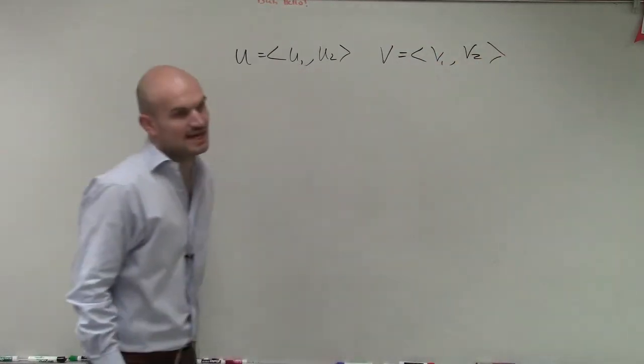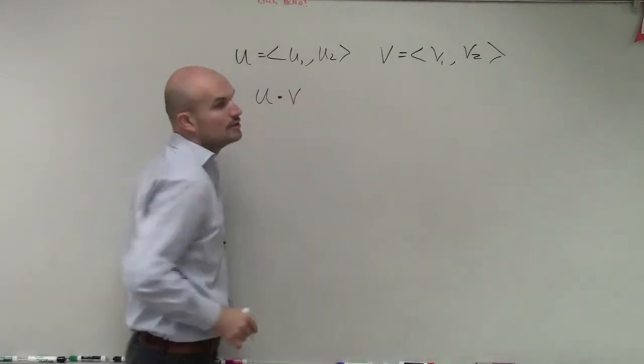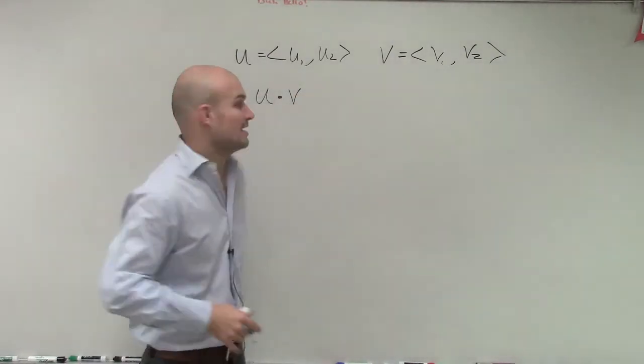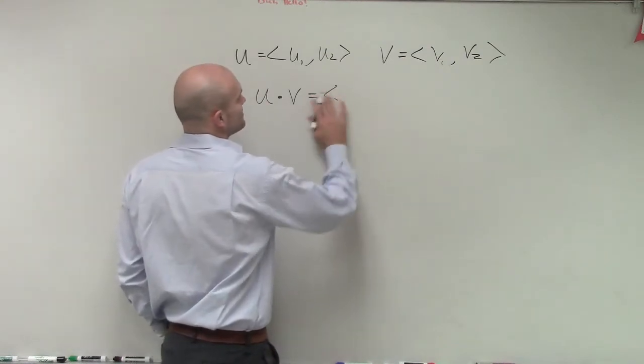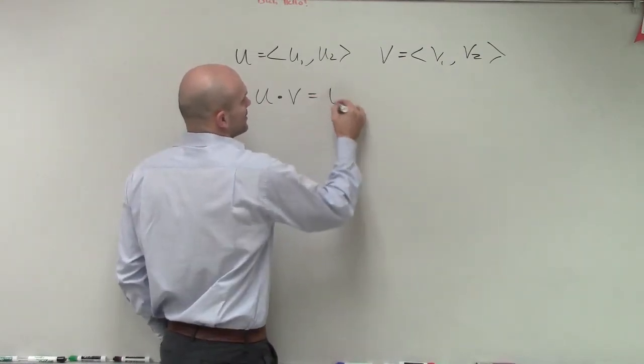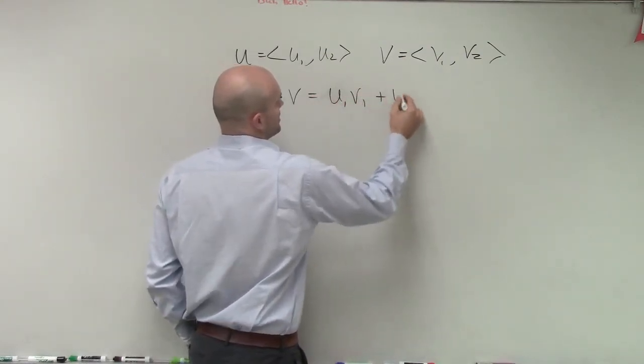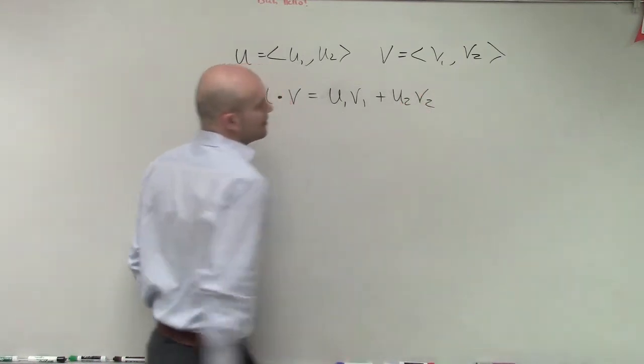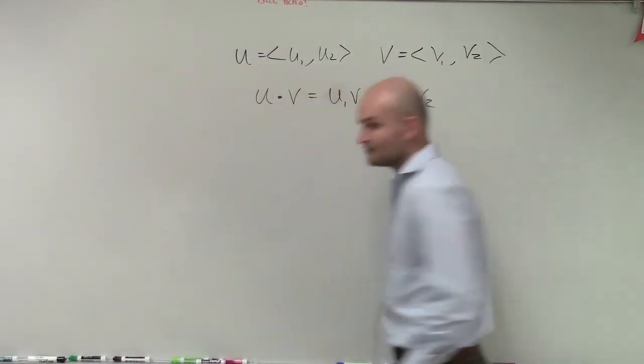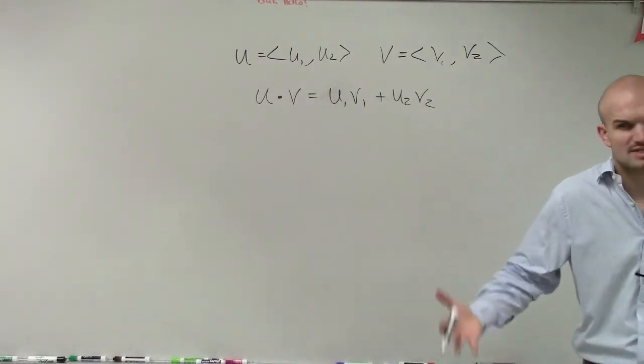If we're going to look at the dot product u·v, remember the dot product just simply states, not a vector form, but it's a scalar: u1 times v1 plus u2 times v2. Now, what I want you to understand is, remember we talked about dot product, it produces a scalar.